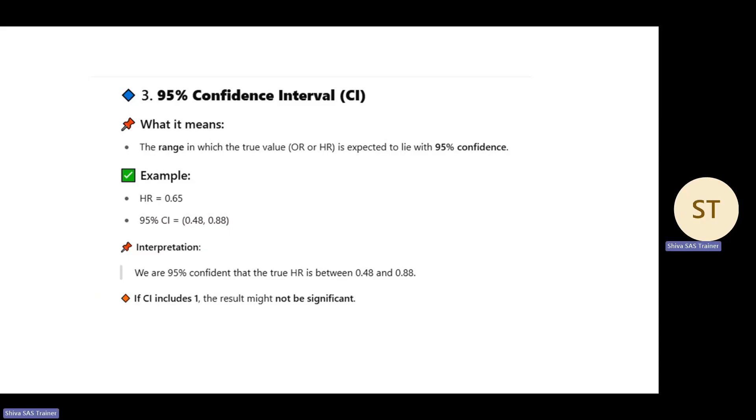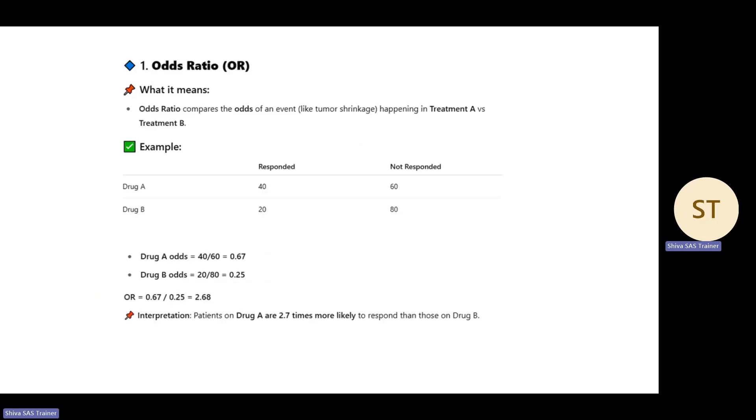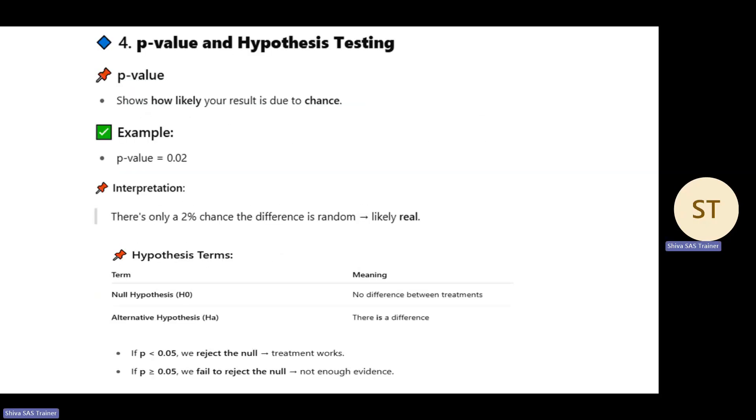Odds ratio compares the odds value between two treatments. And the p-value: if you're getting a p-value less than 0.05, it's a more significant value. That means the comparison is significant. If it's greater than 0.05, there's not a more significant difference between the two treatments.